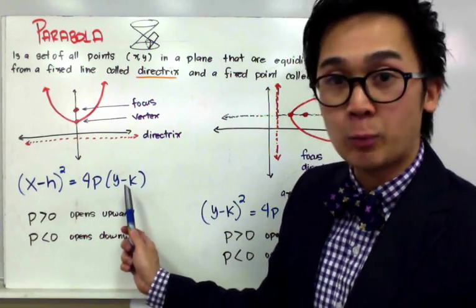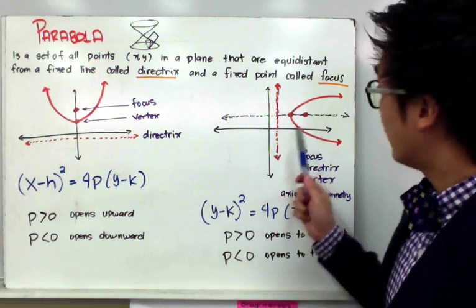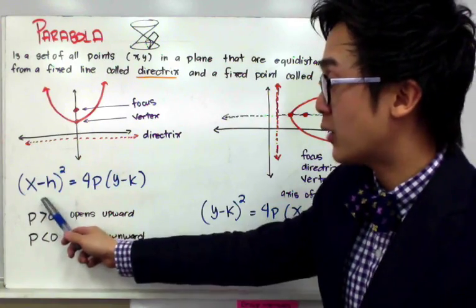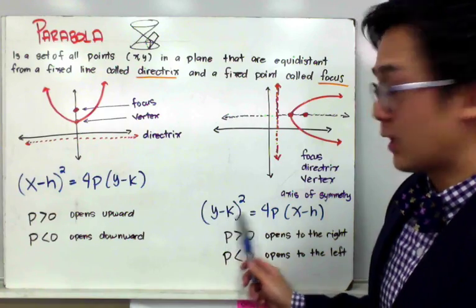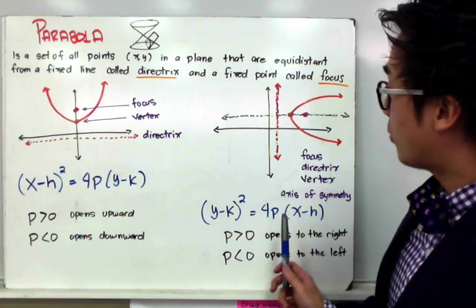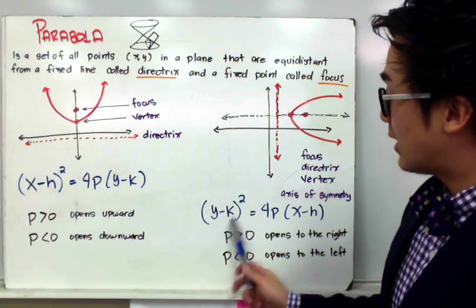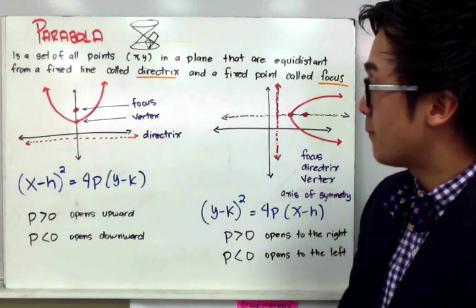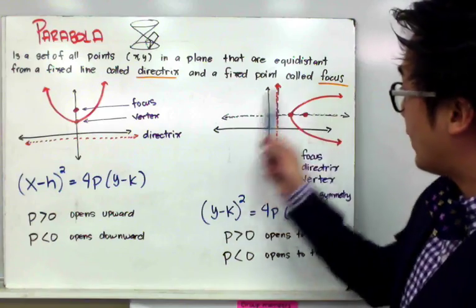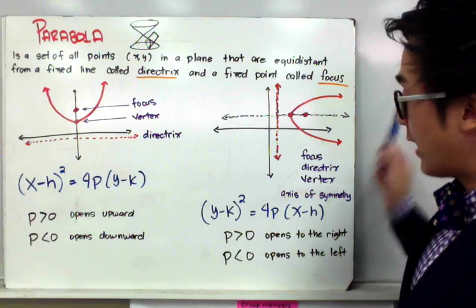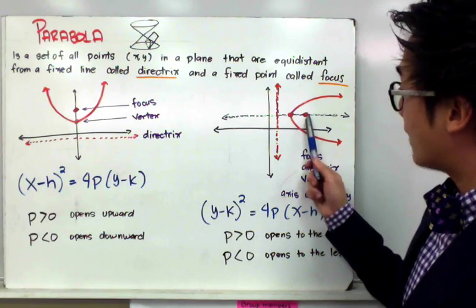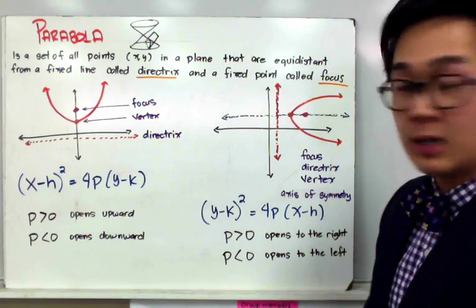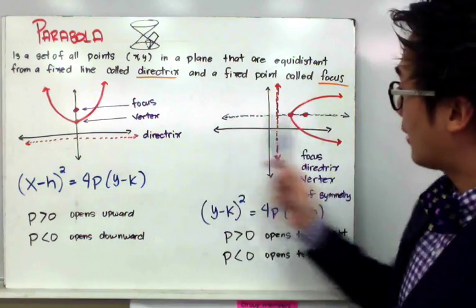When the parabola is opening sideways, the standard equation changes to (y − k)² = 4p(x − h). So when the parabola opens sideways, we use (y − k)² instead. You need to make sure you're using the correct form depending on how it's opening. The parabola opens to the right if p is positive, and to the left if p is negative.